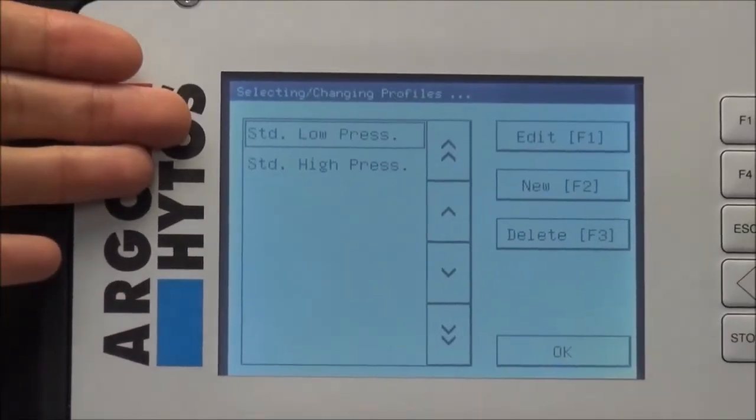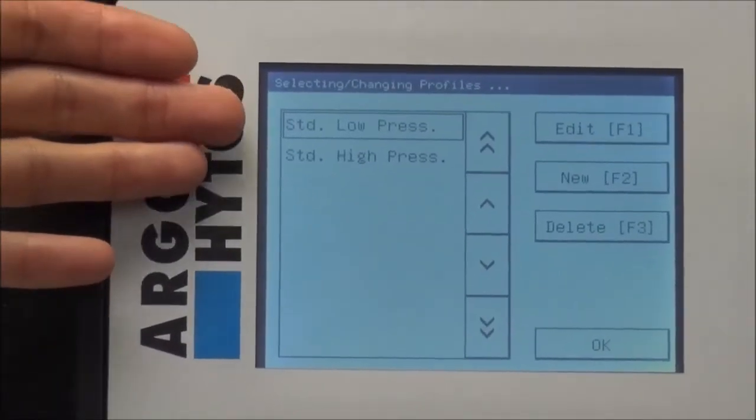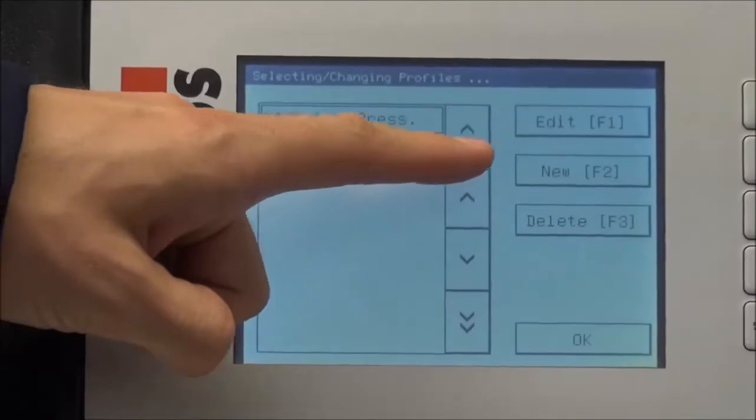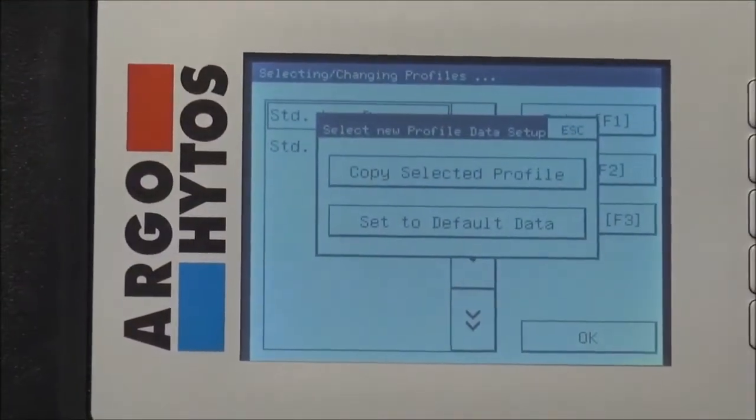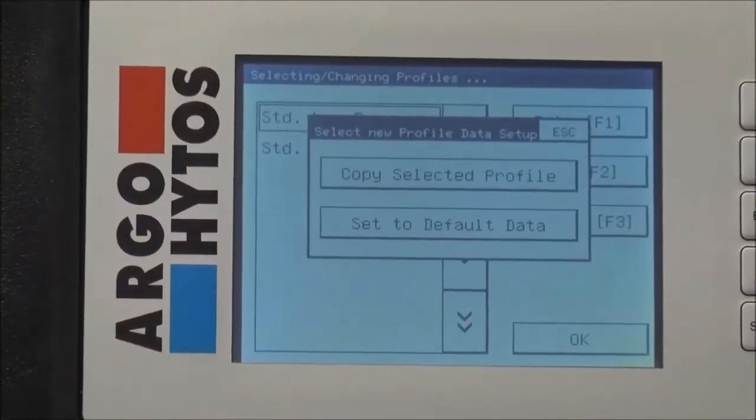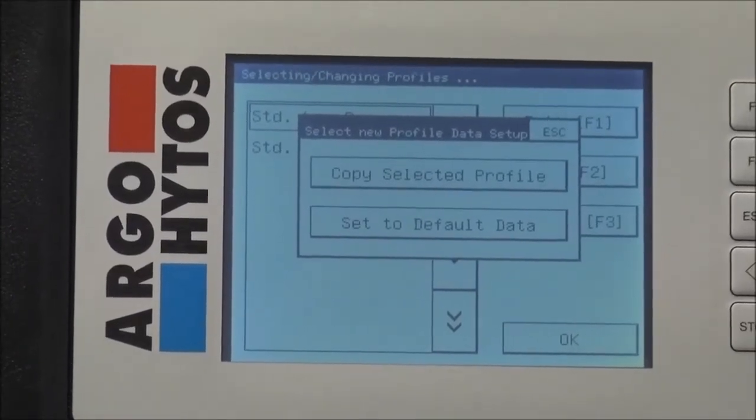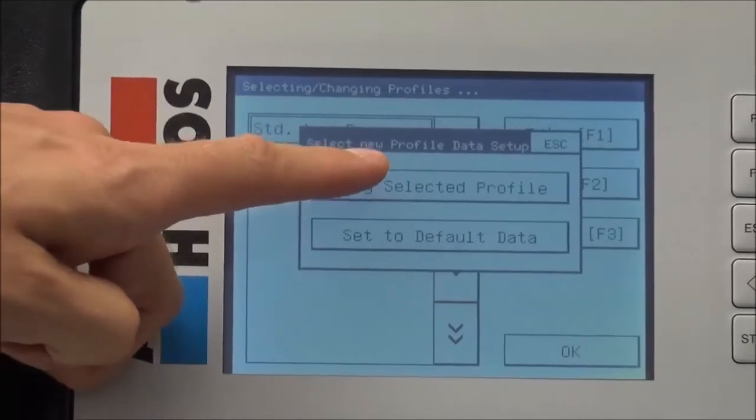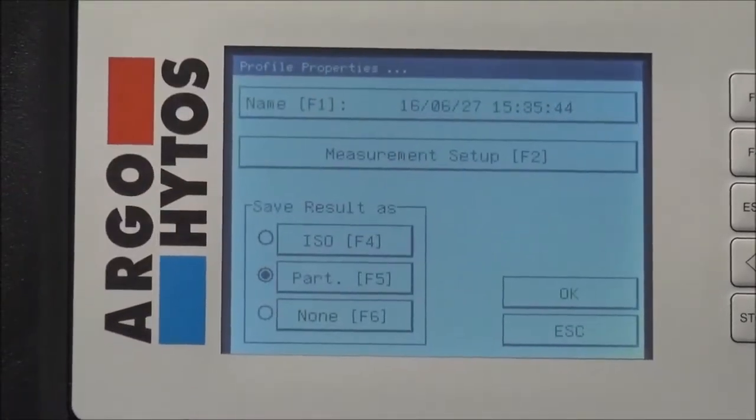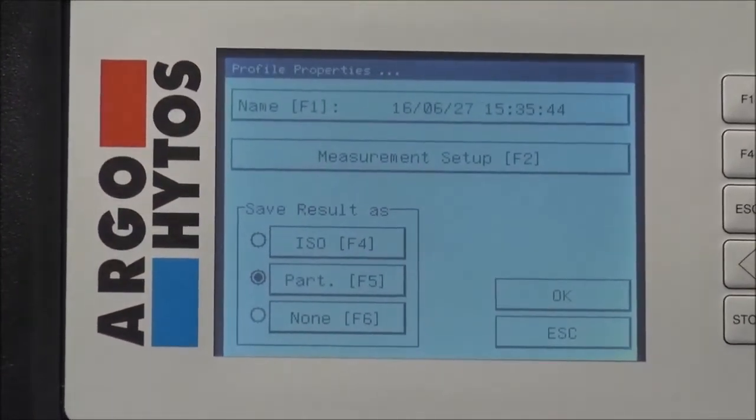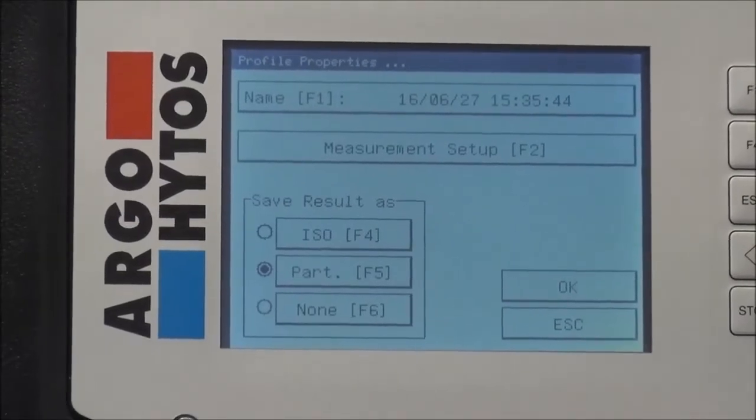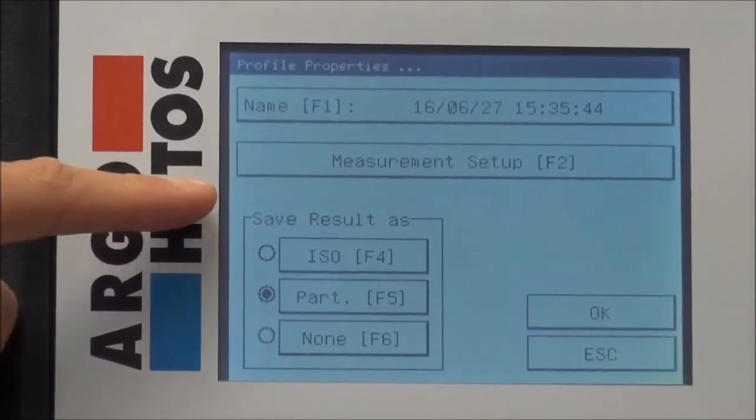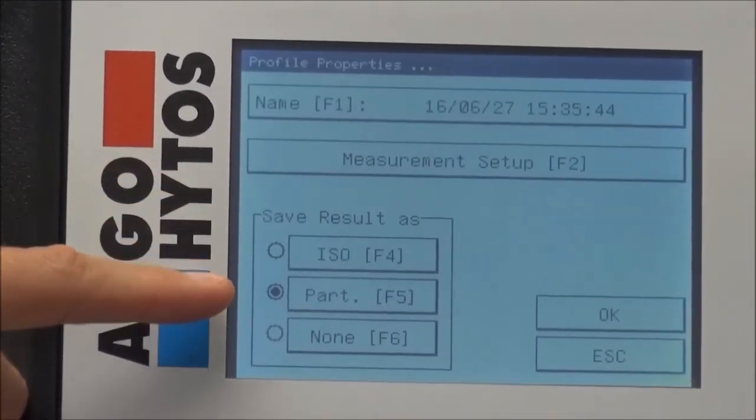You see these two standard settings first of all for low pressure and then for high pressure. You get two options now when you want to create a new setting. You can either copy an already existing profile or use standard default data. In our case we want to use the already existing standard low pressure profile as a standard or as profile base.